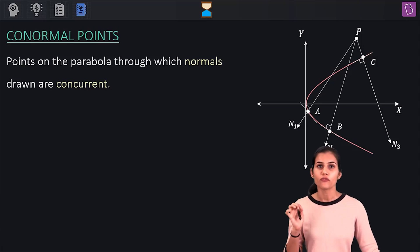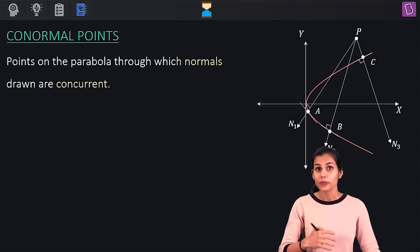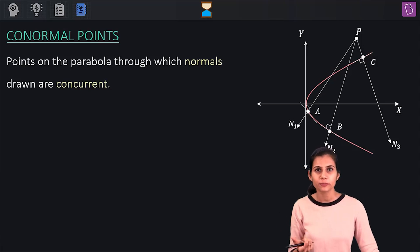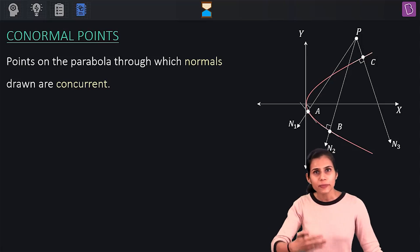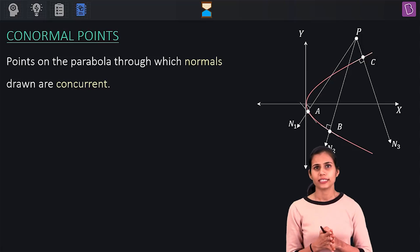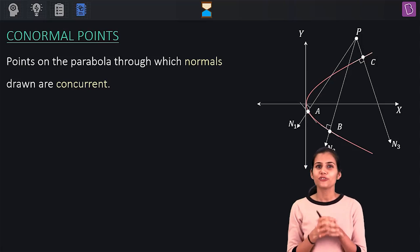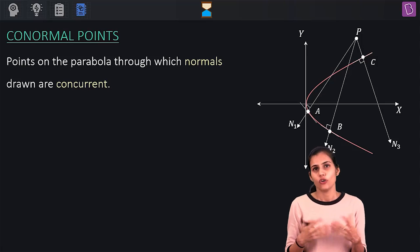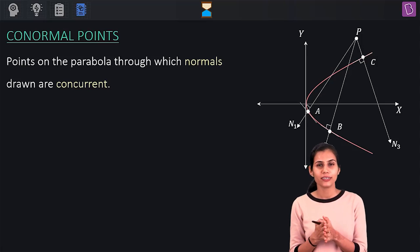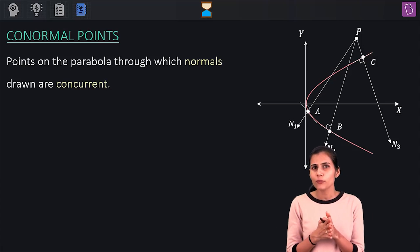These points are also the feet of the normals. As many distinct normals we can draw from point P, those many co-normal points will be generated. So the question is: from a point, how many normals can you draw to a parabola? Or, how many co-normal points can exist? Is there a maximum?